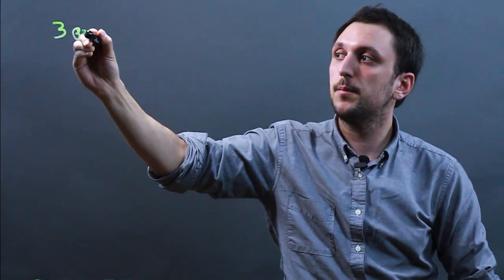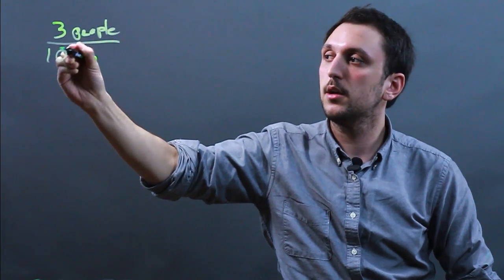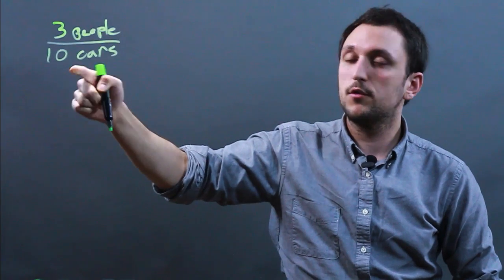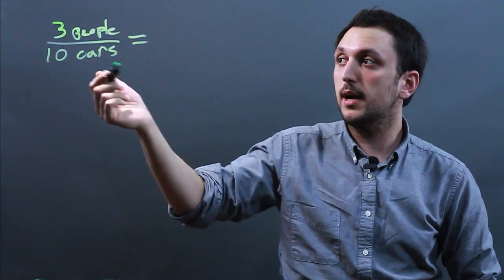Let's say we have a proportion where we say there's three people for every ten cars. So when we set up the proportion, maybe they only tell us how many people we have.